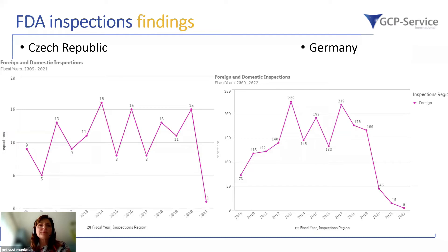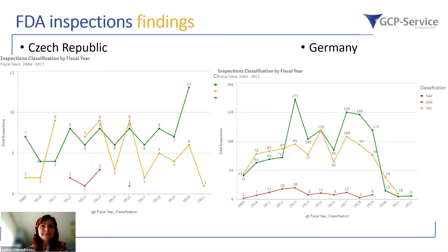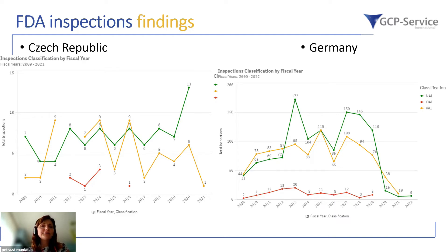For example, filtering for inspections in the Czech Republic compared to Germany, you can see not only the number of inspections performed in each country, but also the findings grading and the auditees or inspectees who were inspected by FDA. It is visible that in Germany from 2019 there were no critical findings anymore, and for the Czech Republic there was only one last critical finding in 2016.